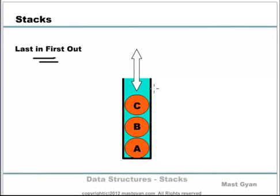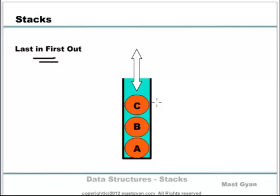Let's look at this simple picture to understand this better. Consider this as a jar of balls with only one open end, which currently contains three balls A, B and C. By looking at this picture, one can easily guess the order in which the balls were inserted into this jar. It has to be A, followed by B and then C. So C is the last inserted object into this jar. Now let's say you want to remove an object from this container. The only object that can be removed from this container is C because it is sitting at the top.